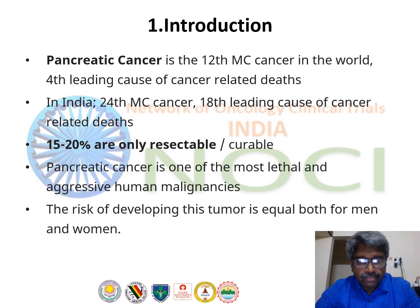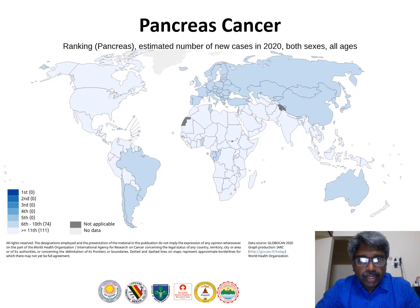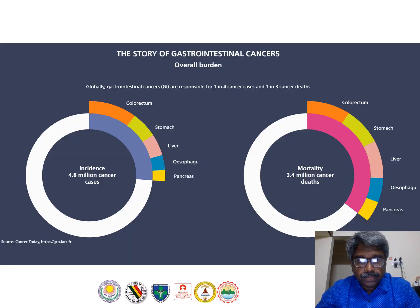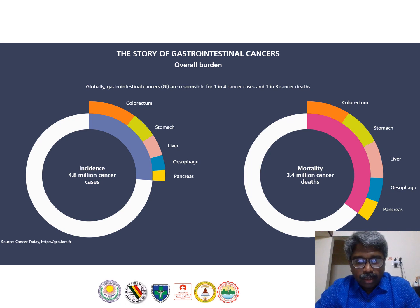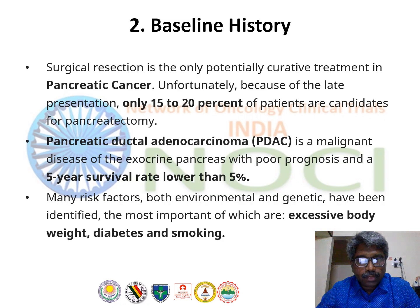Pancreatic cancer is one of the most lethal and aggressive malignancies. The risk for developing this tumor is equal in both men and women. Here you can see the global incidence pattern — India is still lower than 11th in incidence as shown by the color coding. Overall, it accounts for the top 10 most common cancers in incidence and mortality from cancer-related deaths.